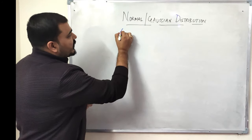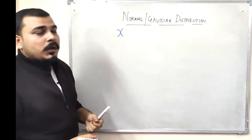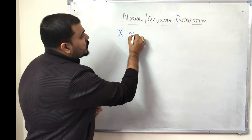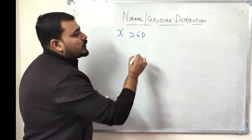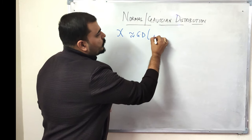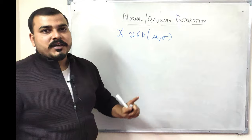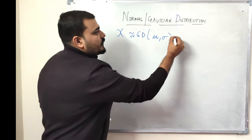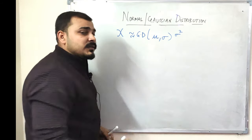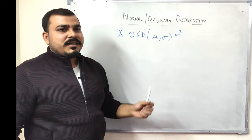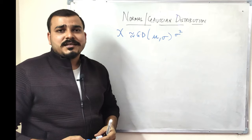Let us consider X as some random variable that belongs to a Gaussian distribution or normal distribution with some mean mu and standard deviation sigma. I can also write it as variance, which is given by sigma squared, but right now we are just going to consider sigma.